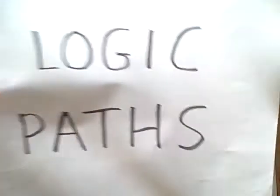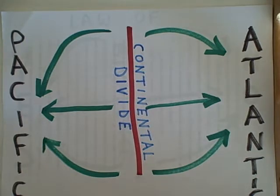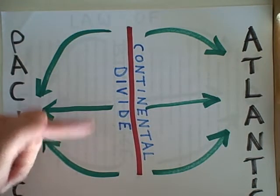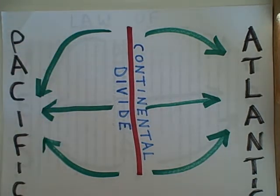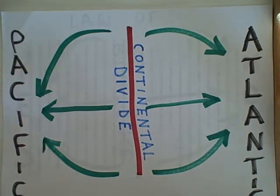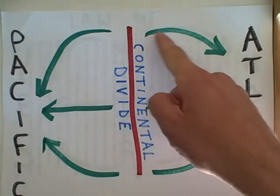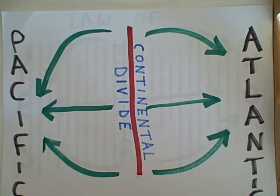I got the idea for this thinking about the continental divide. Every drop of rain that falls in the 48 continental U.S. states is going to fall on one side of the continental divide or the other. If it falls west of the continental divide it will get into some river and eventually end up in the Pacific Ocean. If it falls on the east side it'll go down some river and end up in the Atlantic, perhaps having to pass through the Gulf of Mexico first.